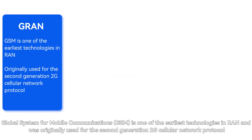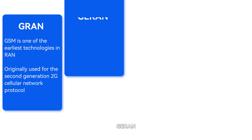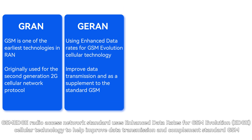GRAN — Global System for Mobile Communications (GSM) — is one of the earliest technologies in RAN and was originally used for the second-generation 2G cellular network protocol. GARAN is an XMEG radio access network standard that uses enhanced data rates for GSM evolution (EDGE) cellular technology to help improve data transmission and complement standard GSM.